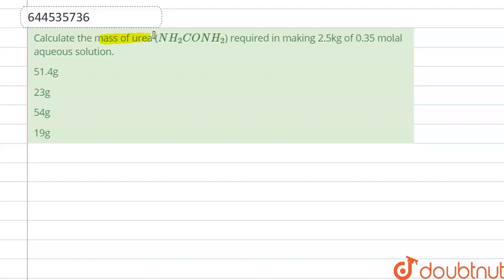Calculate the mass of urea required in making 2.5 kg of 0.35 molal aqueous solution. So a 0.35 molal aqueous solution means 0...